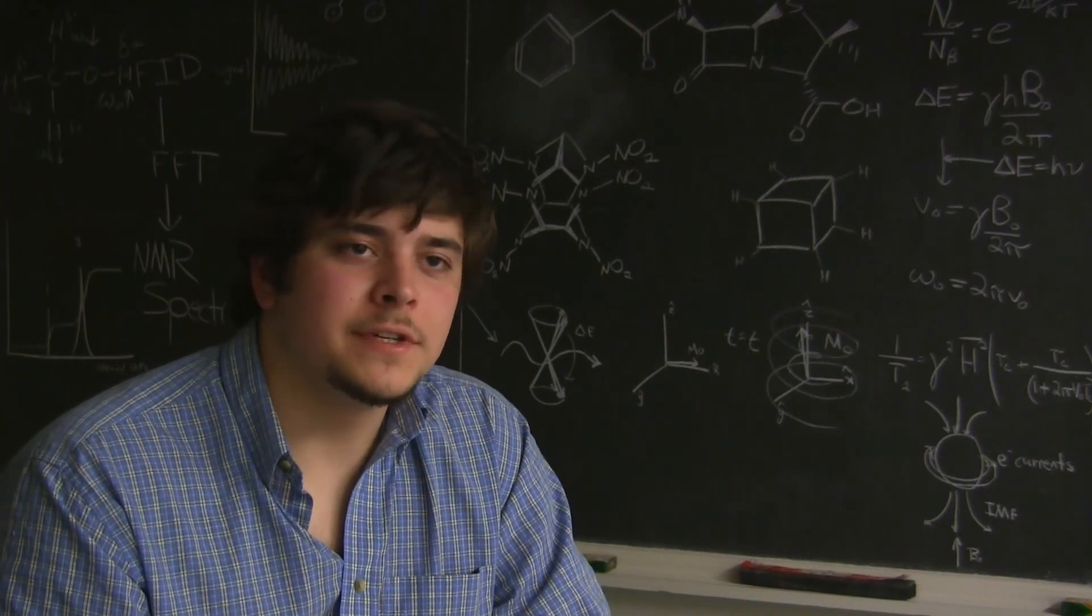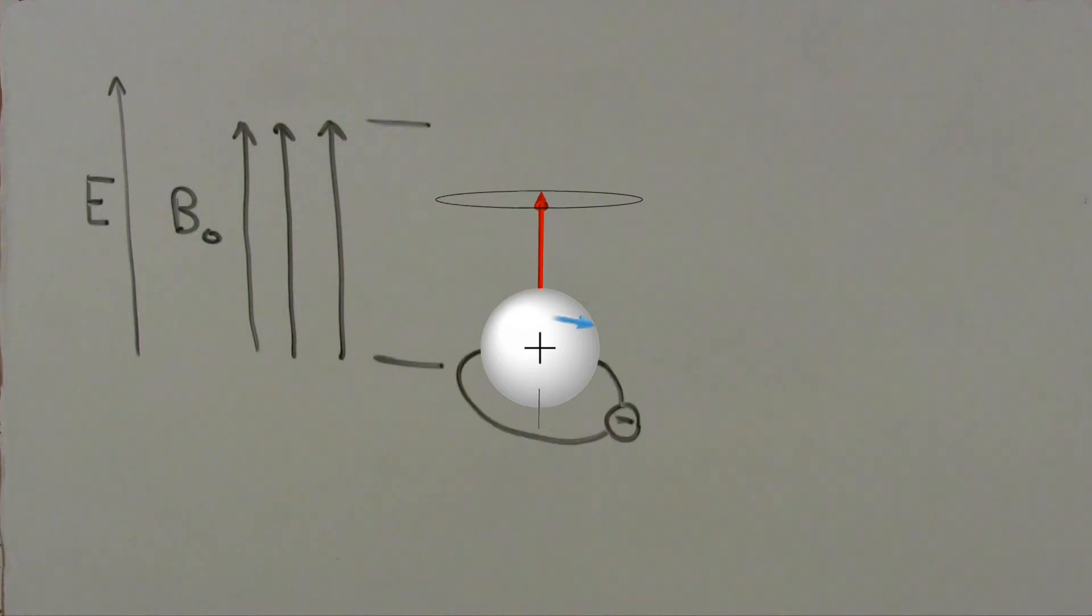Under a magnetic field, a nucleus's electrons will create a magnetic field opposing the external field. This slightly cancels the external field, thus resulting in the nucleus feeling a weaker effective field. Since the effective magnetic field is weaker, the energy gap for spin states is smaller.